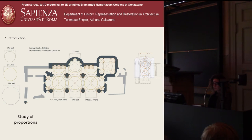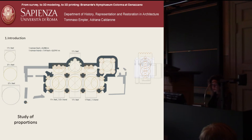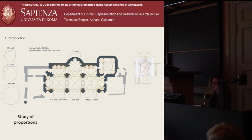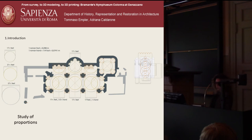Bramante's works are characterized by a certain proportion that guides the whole project, both in the planimetric structure and in the rising wall. Here we can see the application in the Nymfeo, and on the next slide, in the project for St. Peter in Rome. Thanks to the analysis of this proportion, we have the possibility to reconstruct the column height and placement on the main east façade.